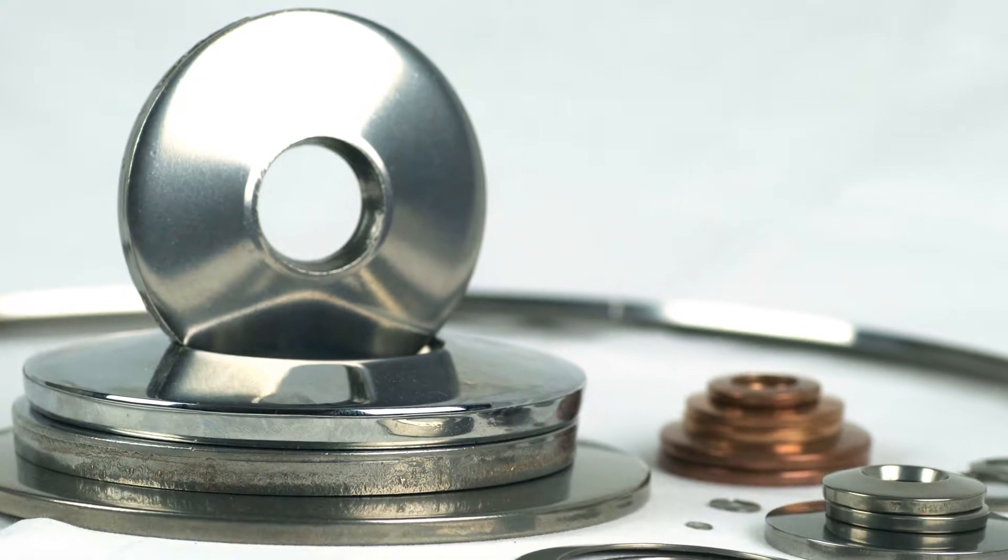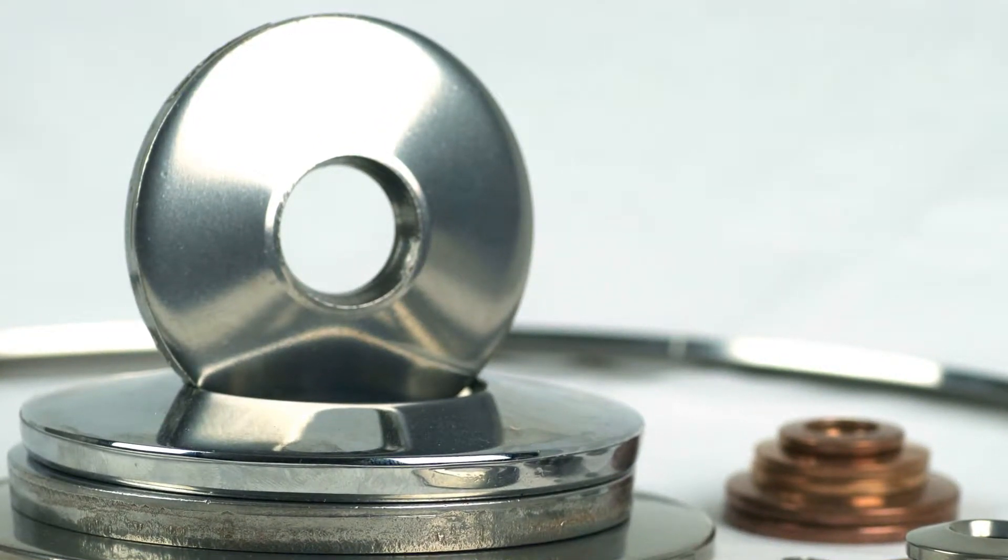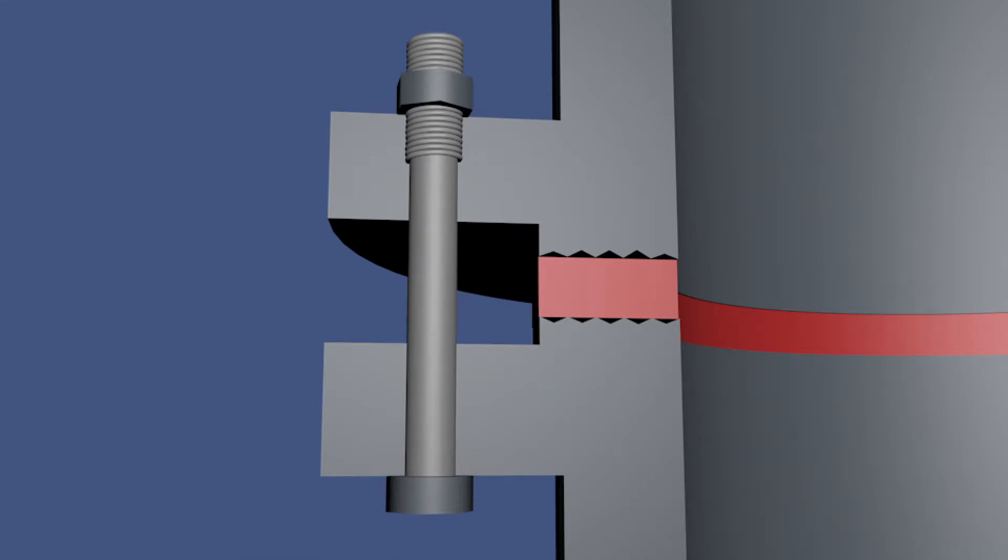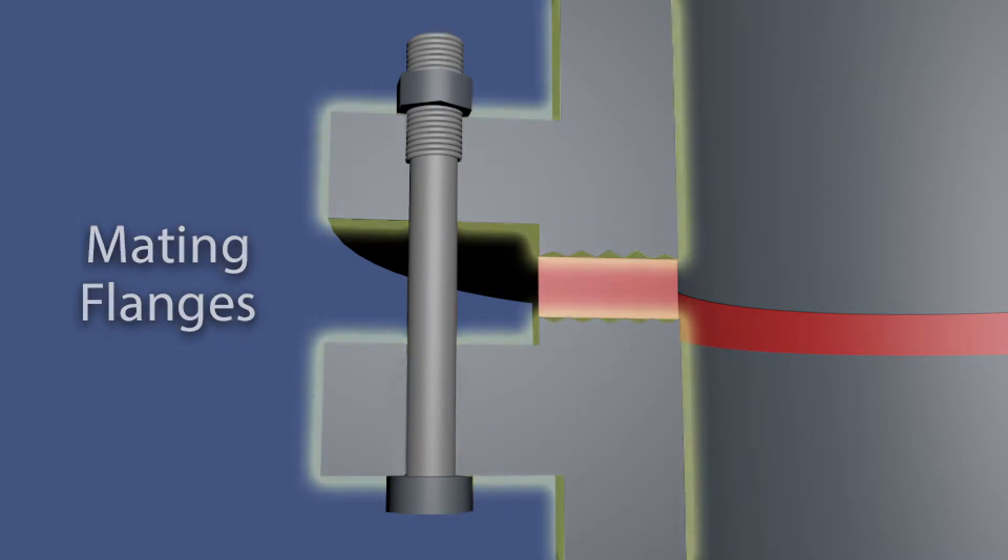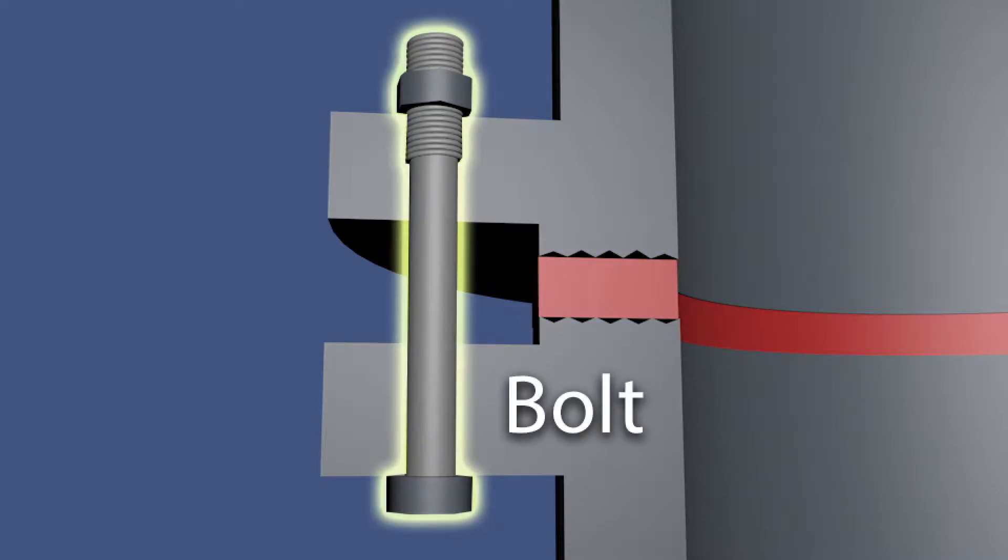One of the most common applications for Belleville Springs is live loading of flange joints. A flange is normally comprised of two mating flanges, a gasket to provide the seal between those mating flanges, and bolts to keep that assembly together.